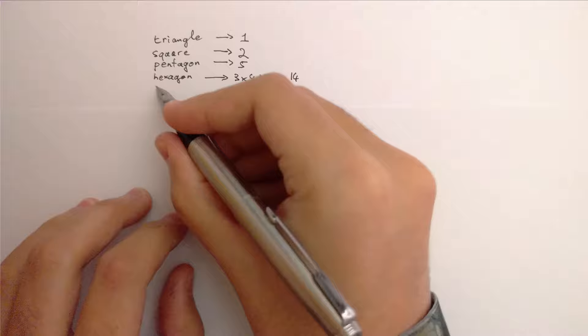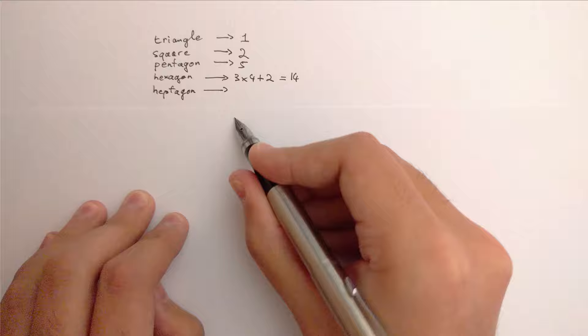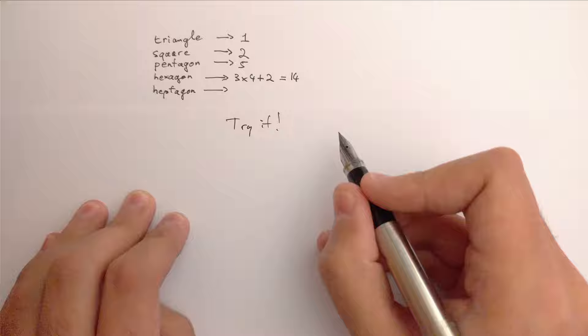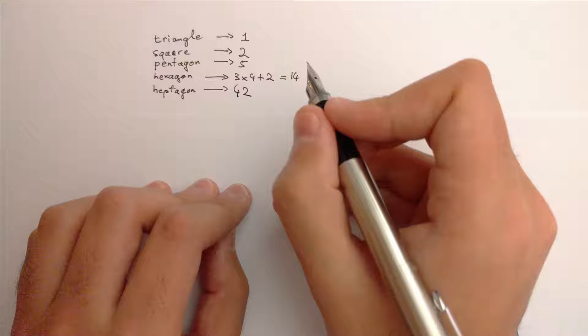What about a heptagon? Well, pause the video and try it out yourself. If you did do it, you should have found out that the answer is 42, and that counting these things gets a little finicky.